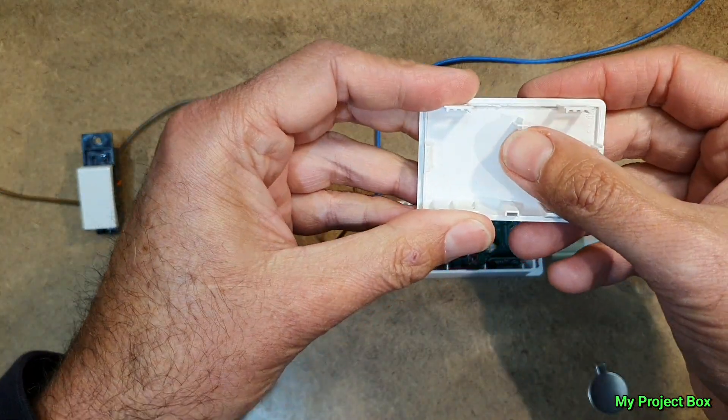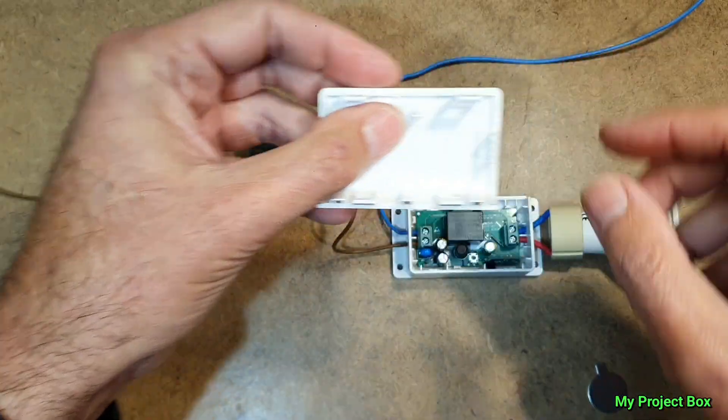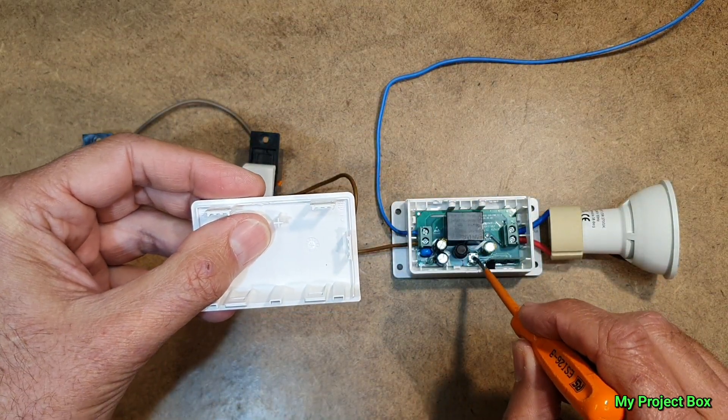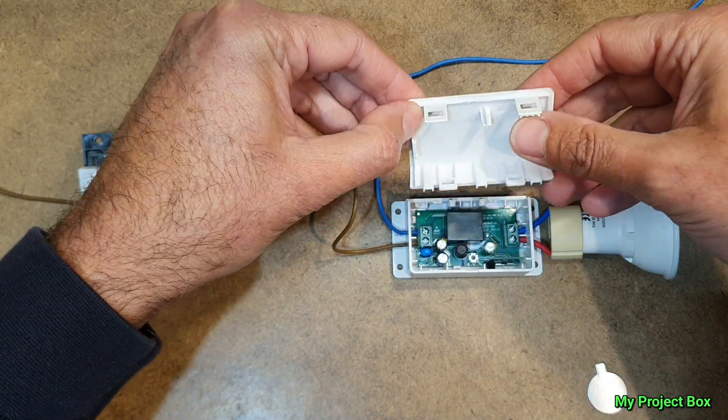Like so. And what you see is the lid is essentially the switch. It's got a little plastic pillar there that presses the little switch on the inside. So it's quite a clever mechanism that turns it into a giant switch.